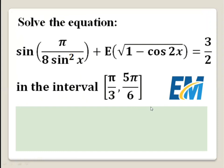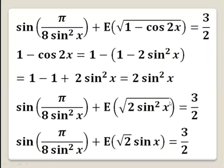We are working in the interval pi over 3 to 5 pi over 6, and in this interval sine of x is positive. So the square root of sine squared x will be sine x and not minus sine x. Then the equation becomes sine of pi over 8 sine squared x plus the integer part of square root 2 multiplied by sine x, equals 3 over 2.